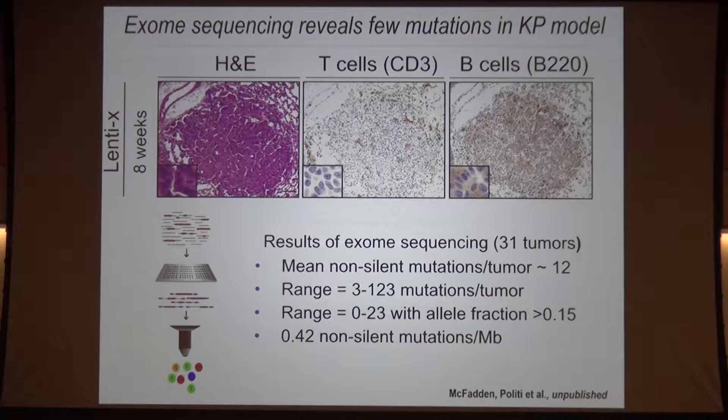We now think we understand that because we've done genome sequencing of these tumors and find very few somatically acquired mutations — a very small number of protein-altering mutations. Thus, the tumors have very few antigens for the immune system to see; they are stealth to the immune system. This is in contrast to human lung cancers, which have hundreds of protein-altering mutations and therefore a much greater likelihood of having antigens.